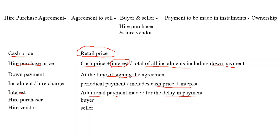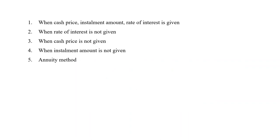These are the important terms to know before we start calculating interest. Calculating interest depends on the information given in the question. If cash price, installment amount, and rate of interest are all given, one method is used. If rate of interest is not given, a different method applies. If cash price is not given, or if installment amount is not given, different calculations apply. All these methods will be covered in this video. The annuity method, which is quite different from the other four methods, will also be seen at the end.